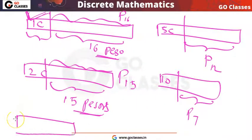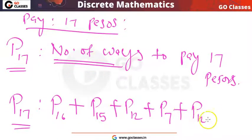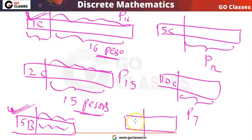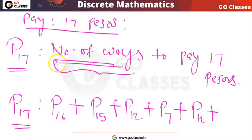Or you can pay a 5 peso bill first — then the remaining is how many ways to pay 12 pesos. Or maybe you give a 10 peso bill at the start; then you have to find the number of ways to pay the remaining 7 pesos, which is P7.